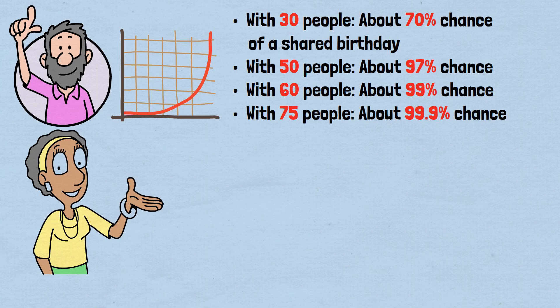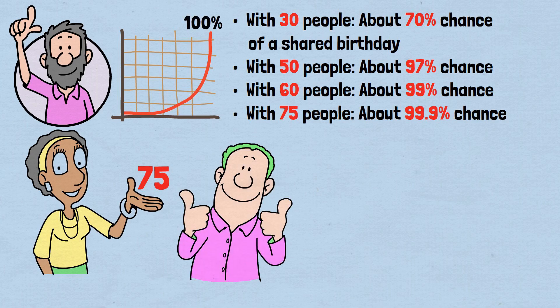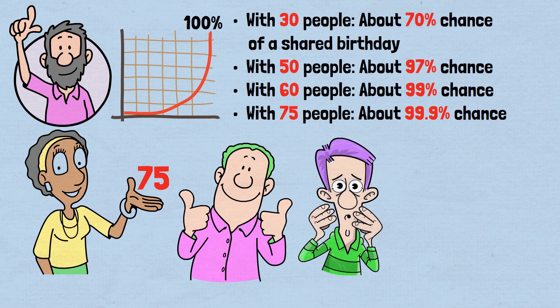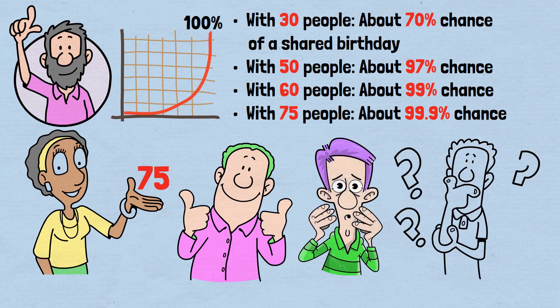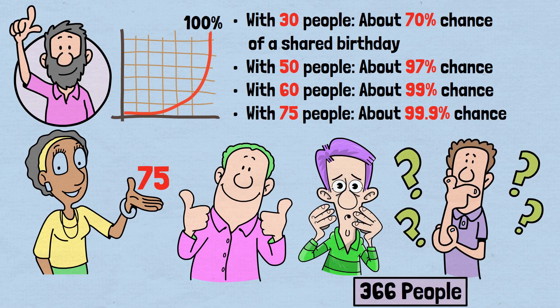By the time we reach 75 people, it's practically certain that at least two people share a birthday. The probability approaches 100% faster than most people expect. When does the probability reach exactly 100%? When there are 366 people in the room.